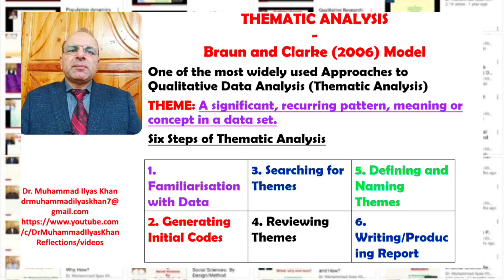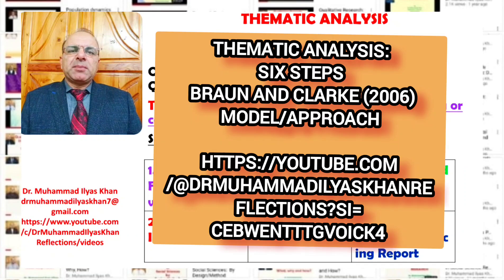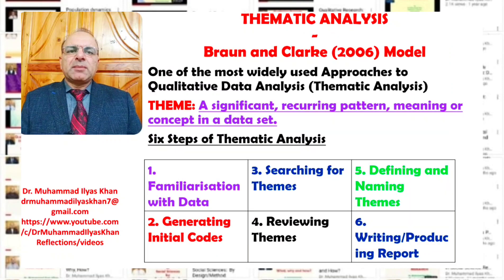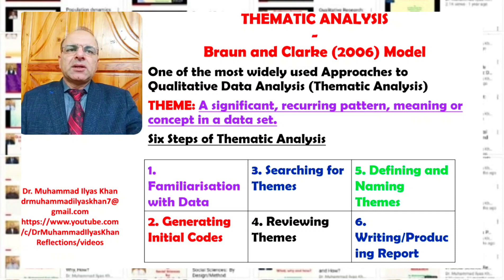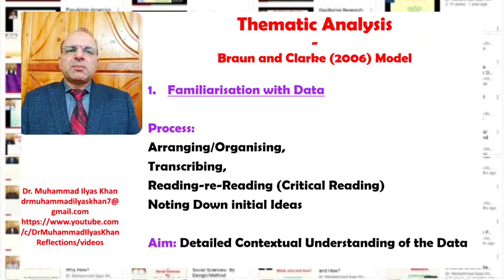The process of thematic analysis suggested by Braun and Clarke has six steps: familiarizing with the data set, generating initial codes, searching for themes, reviewing themes, defining and naming themes, and writing or producing the research report. We will discuss these one by one.